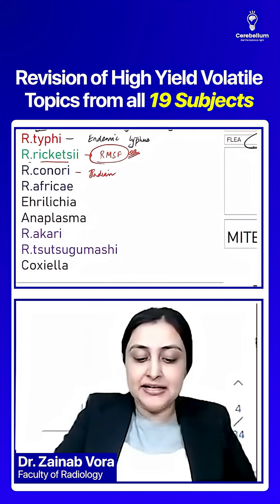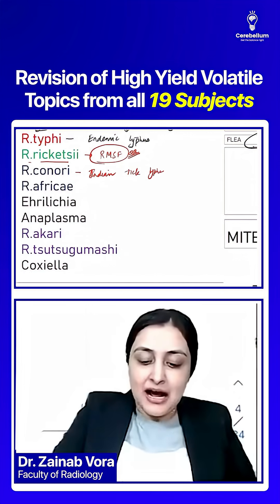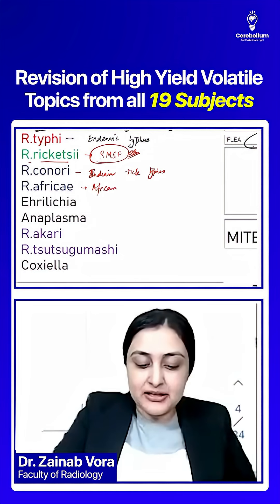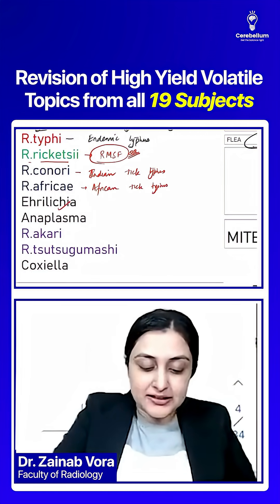R. conorii — which sounds like an Indian name — causes Indian Tick Typhus, and R. africae causes African Tick Typhus.